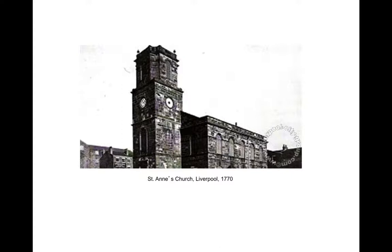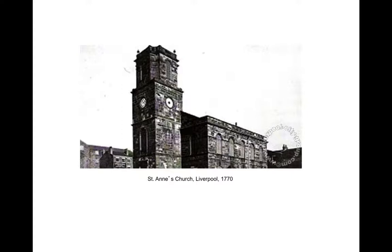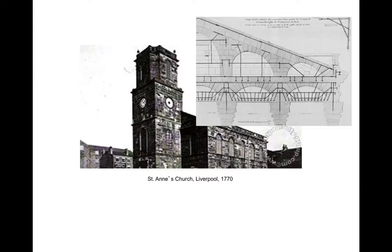The first recorded use of cast iron in a British building is usually associated with the evolution of factories, but no British capitalist prior to 1790 would have been interested in spending the money needed to use cast iron. Actually, the first recorded British building that used cast iron is this small parish church in Liverpool, Saint Anne's, erected in 1770, where cast iron columns were used to support the organ loft because they were smaller in diameter than masonry ones. With this first example, the difference between the French use of iron and the British is quite apparent: while the French are embedding iron elements within traditional masonry, the British are using iron as freestanding objects.